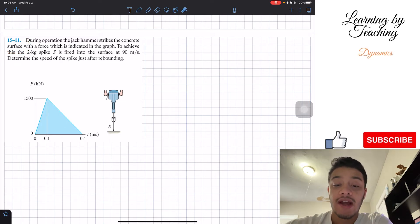It says during operation, the jackhammer strikes the concrete surface with a force which is indicated in the graph. To achieve this, a 2 kilogram spike S is fired into the surface at 90 meters per second. Determine the speed of the spike just after rebounding.